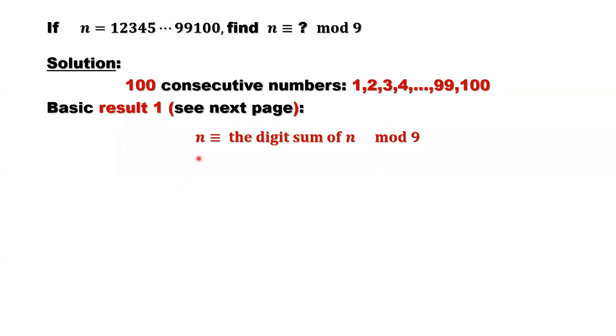So here is the basic result. If we want to find the remainder of N, it is equivalent to find the remainder of the digital sum of N divided by 9. That's a number theory notation. Divide by 9, the remainder of N equals the remainder of this part. This part is the digital sum of N. So we change the problem.